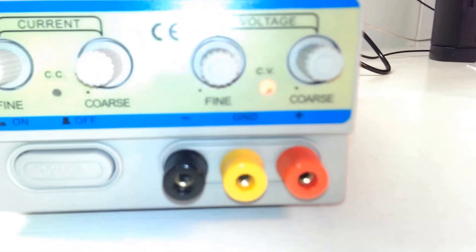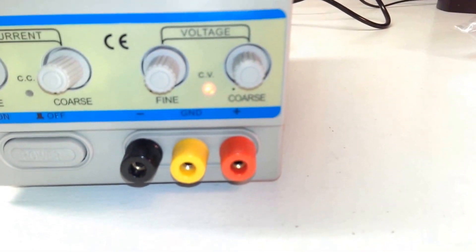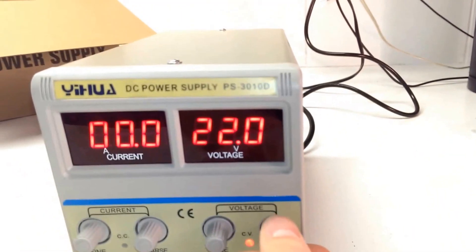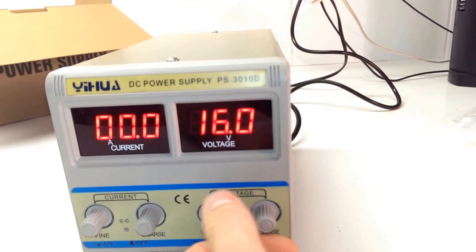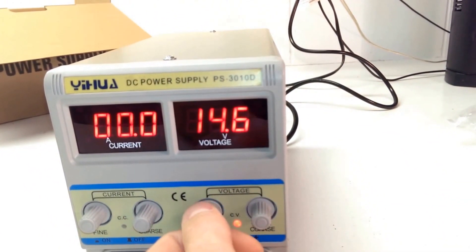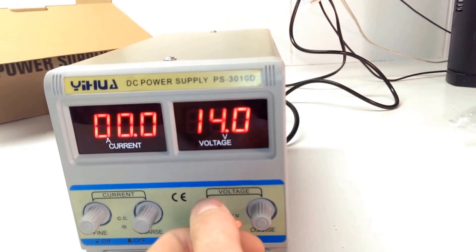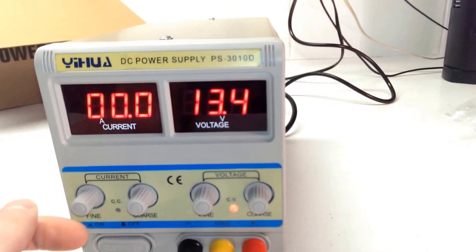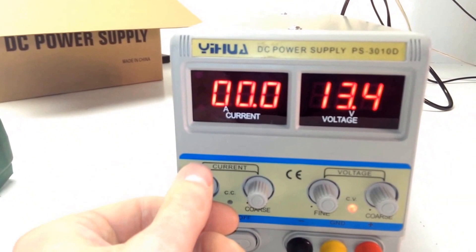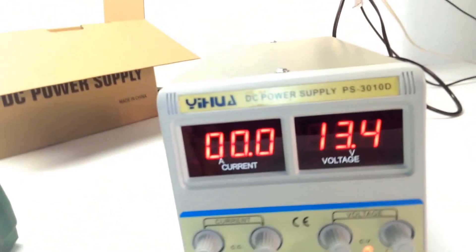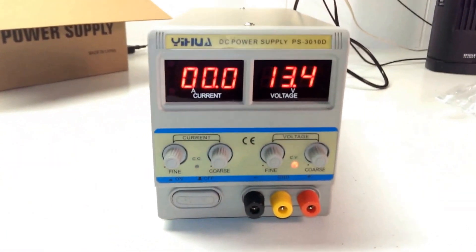It looks like on our adjustments here, it gives us a coarse adjustment and a fine adjustment. So you can adjust to the tenth of a volt. That'll be nice. What happens if I turn this? Nothing. Probably have to have a load hooked up.